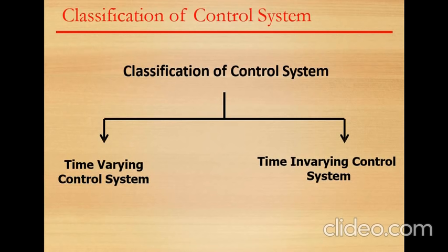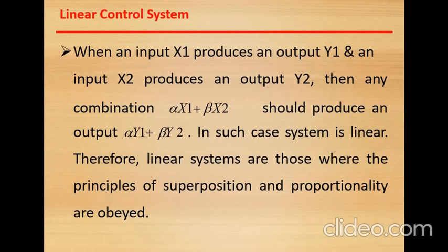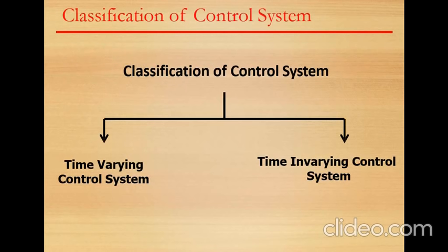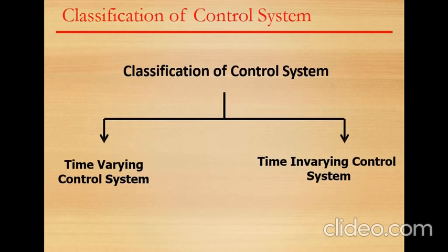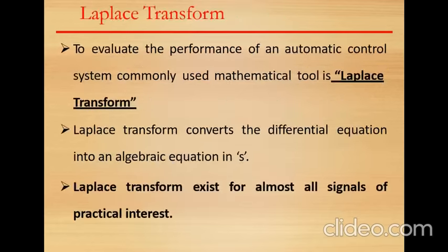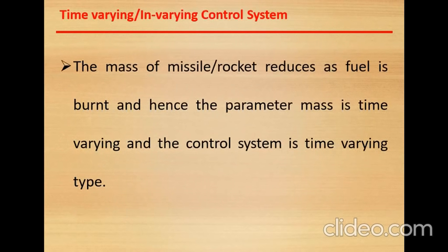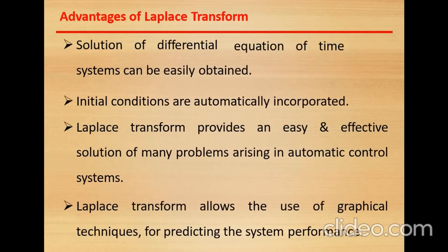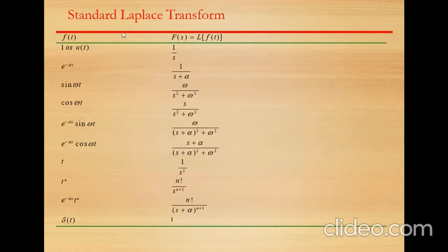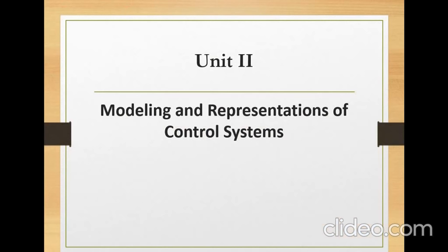We covered only two classifications which are most important for us; if time permits we will see others. We also saw one example each of time-varying and time-invariant control systems, followed by the basics of Laplace transform — what it is, why we use it, and the standard Laplace transform formulas. Now we start Unit 2: Modeling and Representation of a Control System.